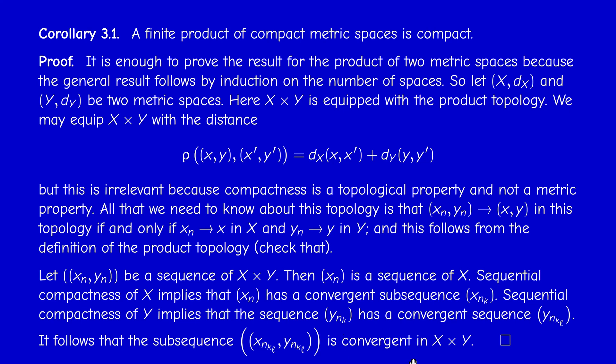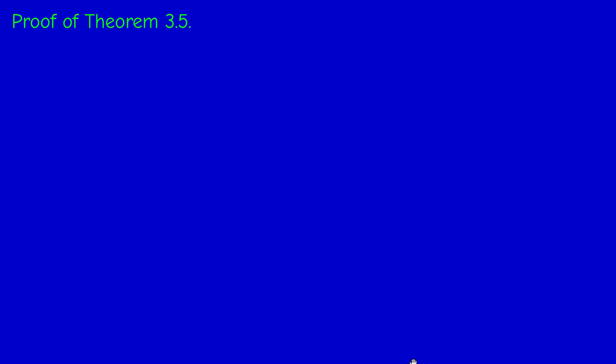Starting from an arbitrary sequence in the product, we have shown it has a convergent subsequence, so X × Y is sequentially compact. This result holds for general topological spaces but the proof is harder; sequential compactness gives us an easier argument here. The general case — an arbitrary product of compact topological spaces is compact — is actually a deeper result. I will prove Theorem 3.5 in the next video. Thank you for your attention and see you next time.